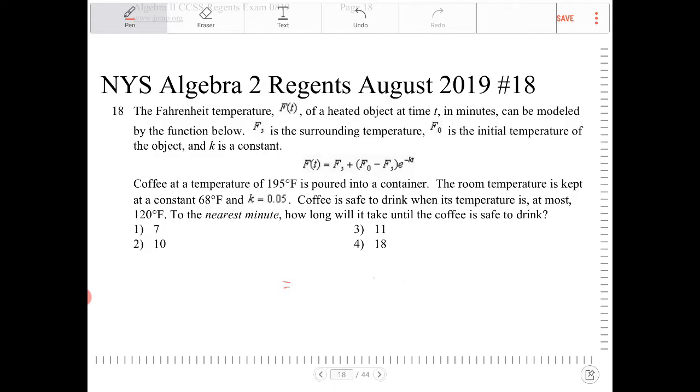So let me write that in there. So f_0 is 195. And the room temperature is kept at a constant 68 degrees. So that's our F_s. And k is equal to 0.05. So e to the negative 0.05.